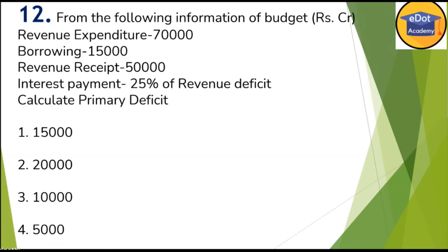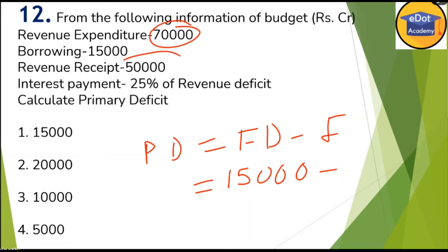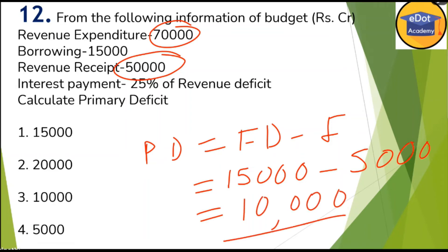Primary deficit is always equal to fiscal deficit minus interest payments. Primary deficit equals fiscal deficit minus interest payment. Fiscal deficit from the previous question is 15,000. Interest payment is 25% of revenue deficit. Revenue deficit is 70,000 minus 50,000 equals 20,000. So 25% of 20,000 is 5,000. Subtracting: 15,000 minus 5,000 gives 10,000. So 10,000 is the answer — option three is correct.